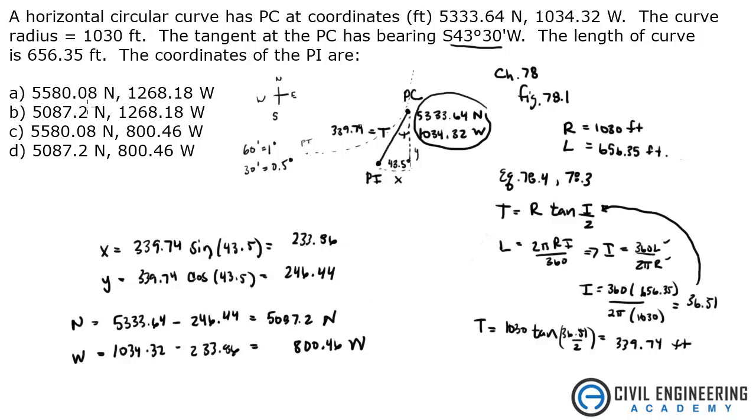5087.2 north. So these are some tricky answers because you could screw up on maybe the angle, maybe you headed northwest or something. So they throw in answers that are similar. But you have 5087.2, that's this, and 800.46. So this is D, answer D.